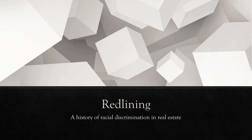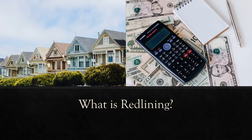Redlining: A History of Racial Discrimination in Real Estate. What is redlining? Cornell Law School defines redlining as a discriminatory practice that consists of the systematic denial of services, such as mortgages, insurance loans, and other financial services to residents of certain areas based on their race or ethnicity. While that alone meets the definition of discrimination, redlining ignores the individual's debt history or background, making the person's location the leading factor in approval or denial.